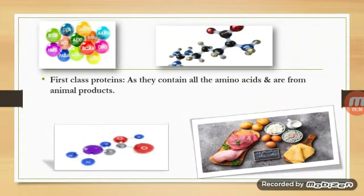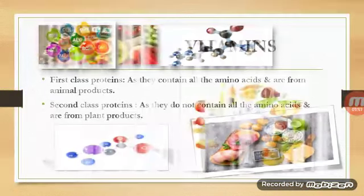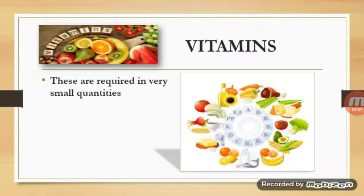Proteins form the major component of all living things because they help in the wear and tear of the body — they are the body builders. Proteins are classified into two types: first-class proteins, which contain all the amino acids and are obtained from animal products, and second-class proteins, which do not contain all the amino acids and come from plant products, making them inferior.